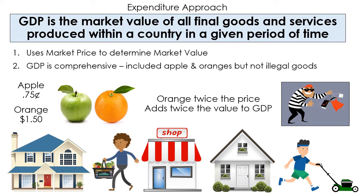Sometimes people ask about rent and home ownership. Rent is pretty easy — when somebody pays rent, that's recorded as income to the landlord, who has to report it. For home ownership, there is a process to calculate what the value of the home would rent for, and then they calculate the value of that house based on the rent it could produce, which is sort of what the mortgage would be.